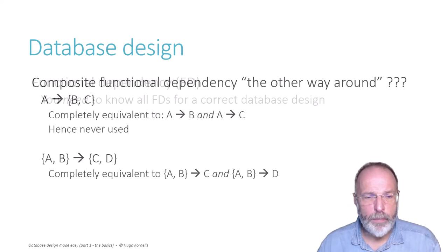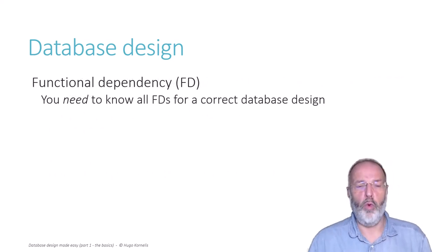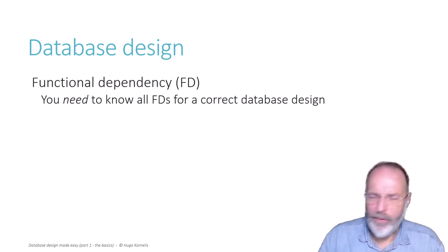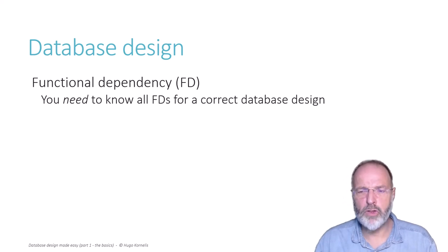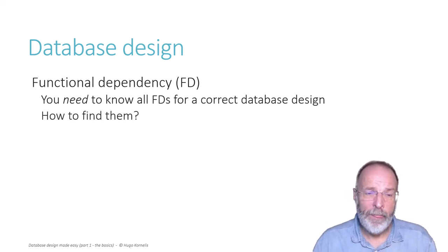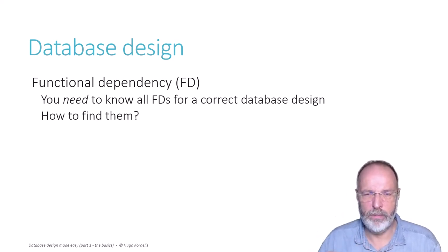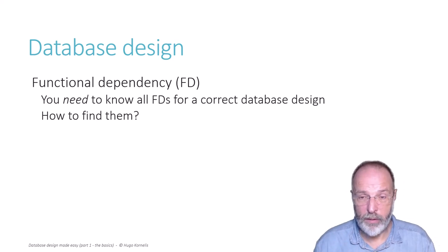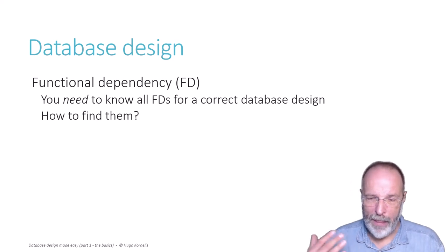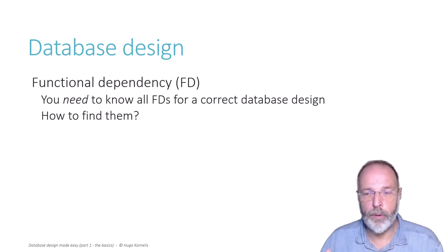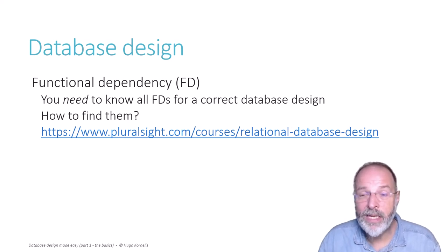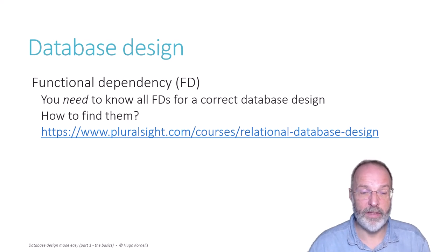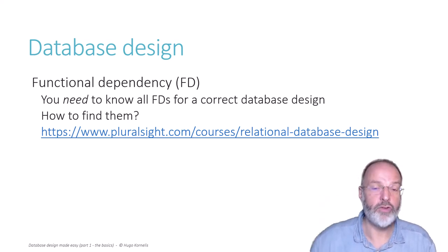The problem with functional dependencies is we actually need them all for a correct database design. If you miss one or have some incorrect, you will get an incorrect database design. It's very important to have them all. The problem is 99% are insanely obvious and you instantly see them — it's the remaining 1% that can get you. Within the scope of this video series I don't have time to cover that at length, but I recorded a course for Pluralsight where I describe a step-by-step procedure that guarantees you will find all functional dependencies. The link will be in the description.